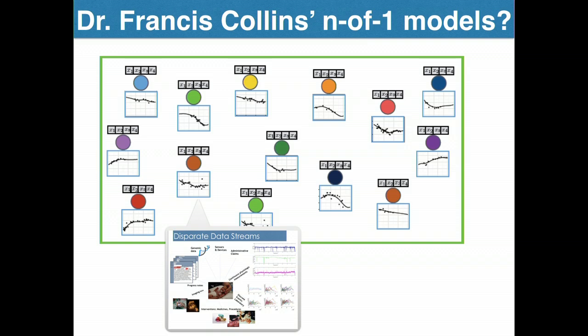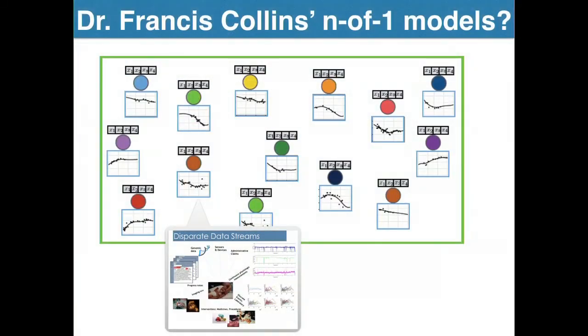Dr. Collins called this the N-of-one model — the idea of how you look at an individual's data and target care to that individual. One naive approach is to just take all of this person's data and train a model for them, but that would overfit badly with no way to generalize. The real question is: how do I figure out how to share data across individuals? What's the graph structure, and at what levels of hierarchy should I be sharing information?